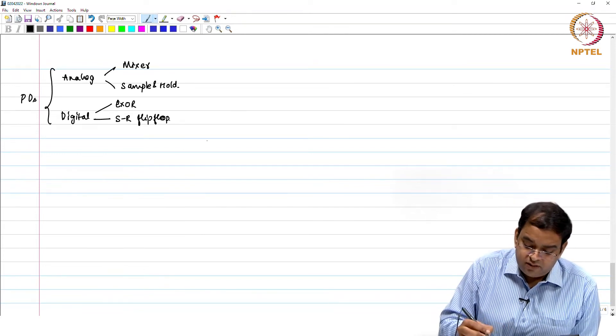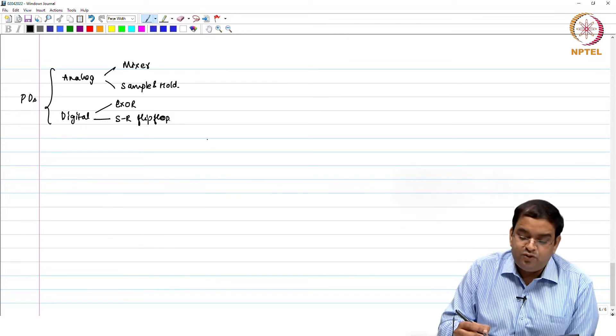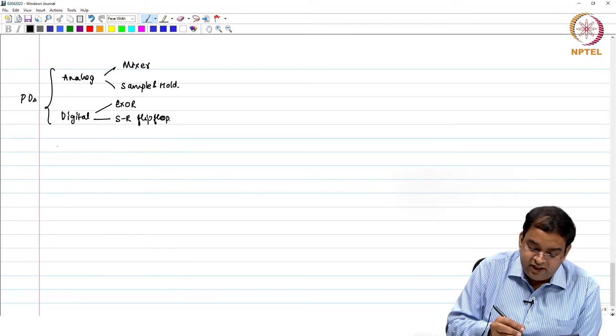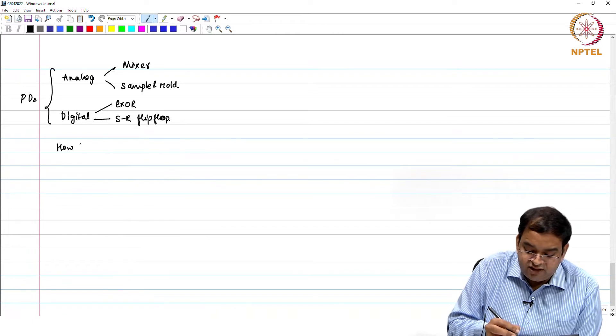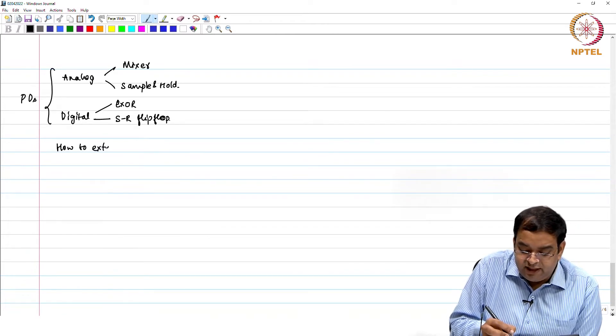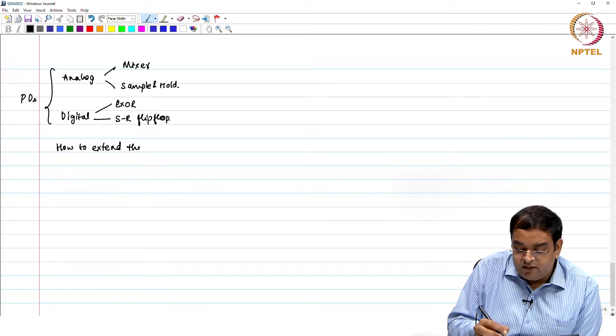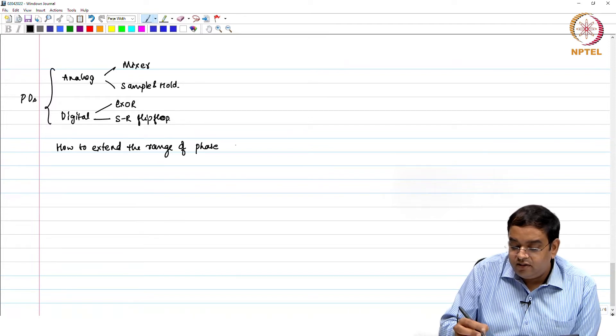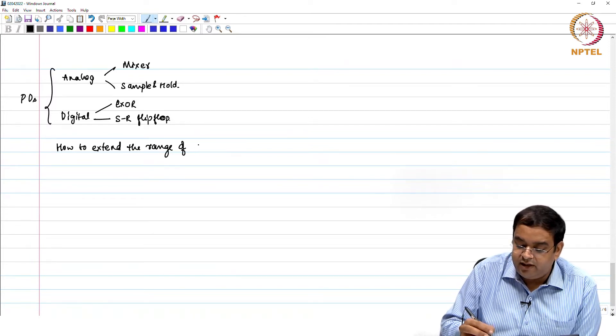So what can we do if we would like to extend the range of the phase error detector? One thing is the question which you need to ask is, how to extend the range of phase error detector, range of PDs.